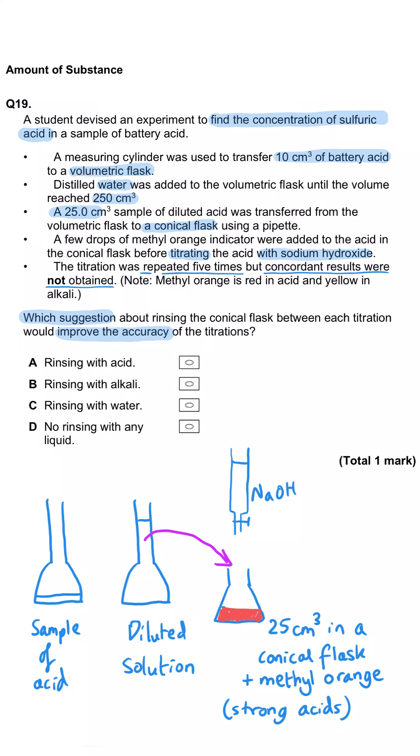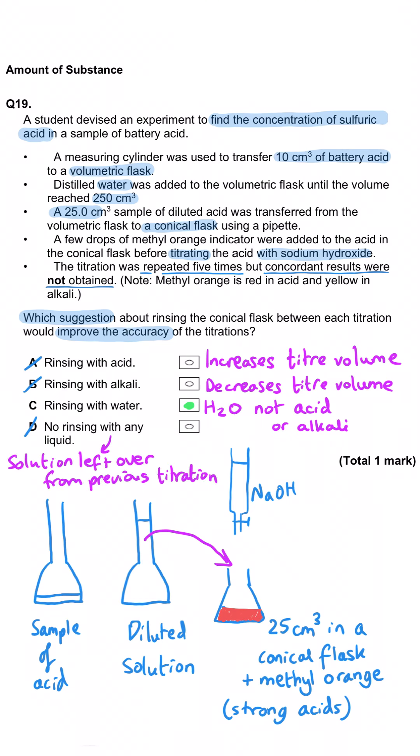Which suggestion would improve the accuracy of the titration? A, rinse the conical flask with acid - no, that's going to increase the moles of acid in the flask and your titer volume would go up. Rinse it with alkali would have the opposite effect. There would be some alkali and acid in the flask at the start, so titer volume would go down. Rinse it with water would definitely be the right answer because distilled water is not an acid or alkali and will make sure there are no leftovers from the previous experiment. D is a crazy answer because there will definitely be leftovers and you'll never know exactly how much alkali is left behind.